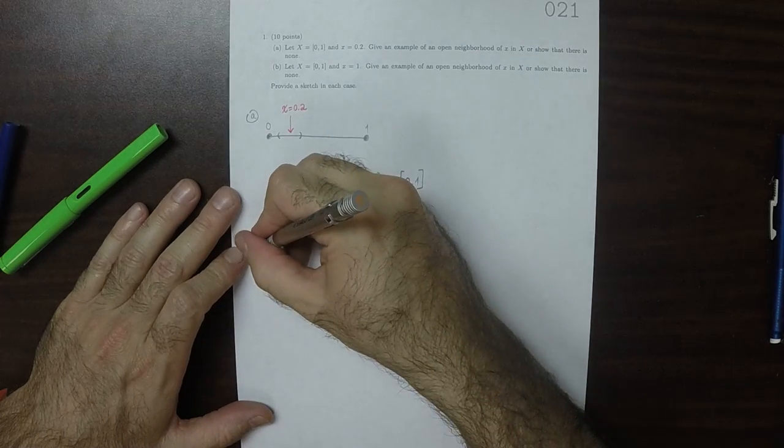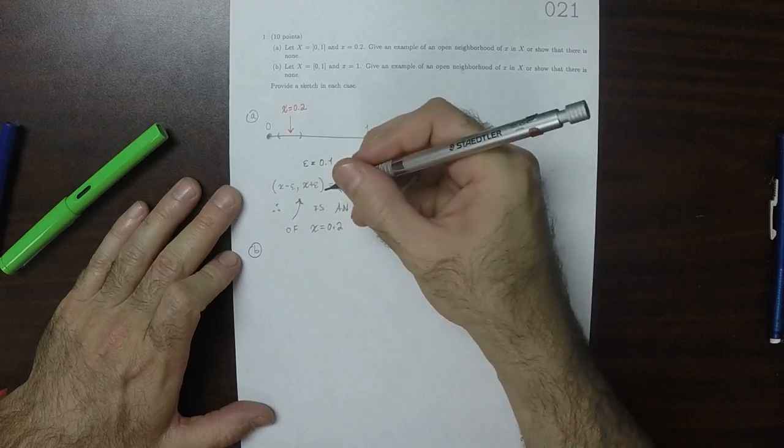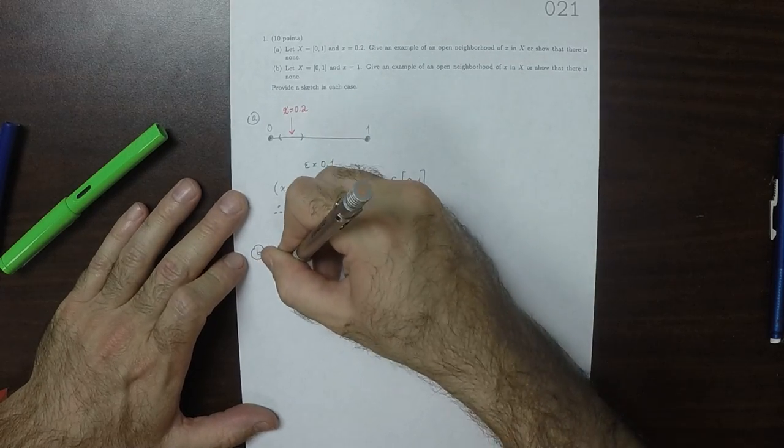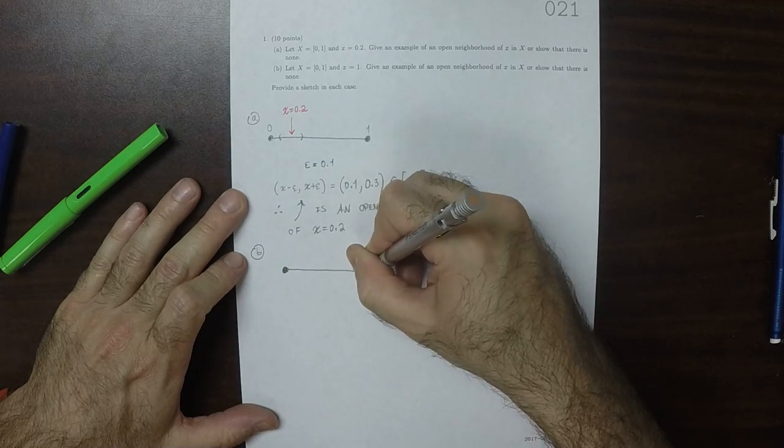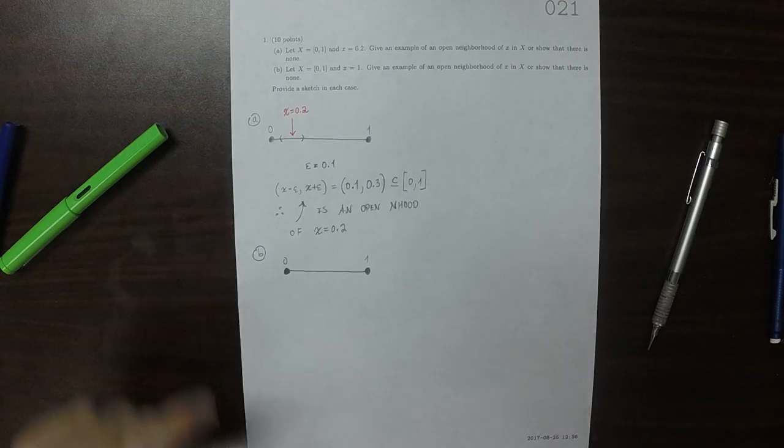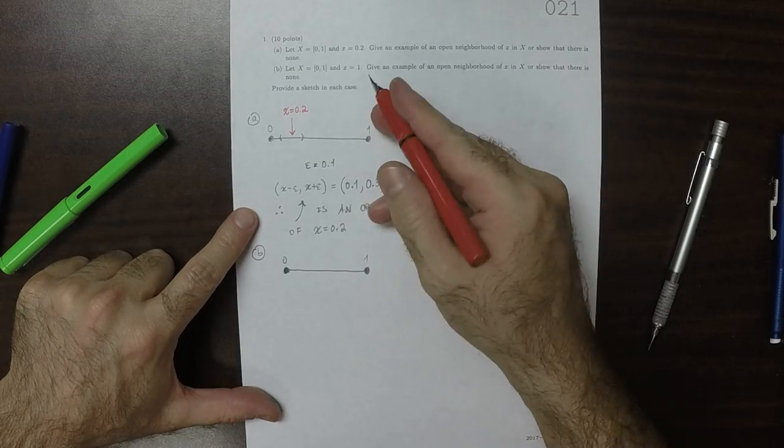For part B, now the request is different. Now it's saying, okay, we still have closed and bounded 0 to 1, and now we're saying that x is 1.